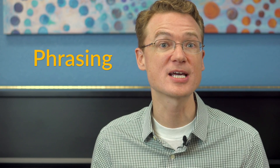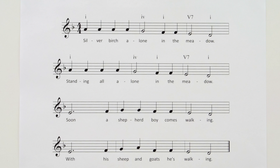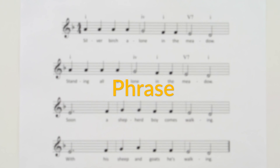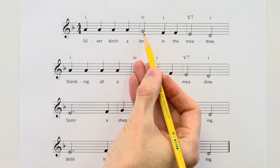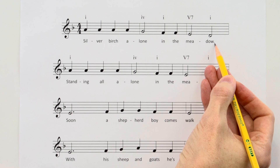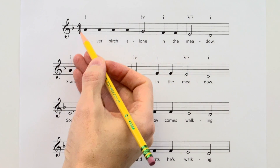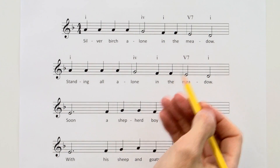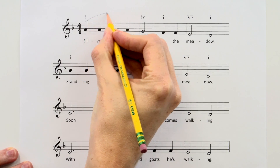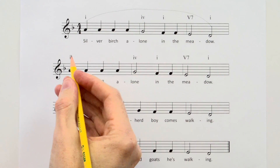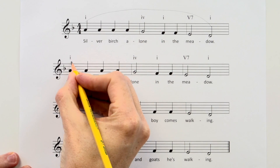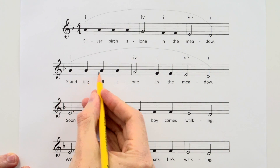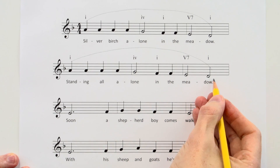To understand phrasing, let's first take a quick look at the score for Silver Birch Tree. Music is built on phrases, and a phrase is like a musical sentence — it has a beginning, a middle, and an end, just like a regular sentence. So the first phrase of Silver Birch Tree is: "Silver birch alone in the meadow." In the lyrics there's a period there, and the notes come to a rest. That is the first phrase, often marked with a long curved line called a phrase mark, which shows you where one musical idea starts and ends. Here's another phrase: "Standing all alone in the meadow."